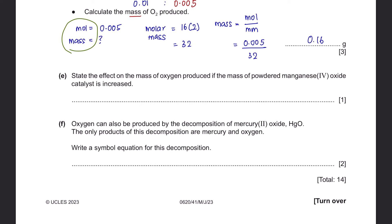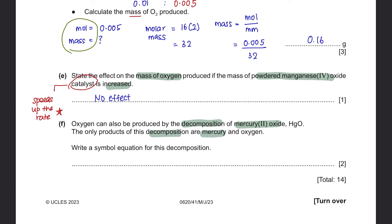Question 4E: if the mass of powdered manganese oxide catalyst is increased, a catalyst only speeds up the reaction — it does not change the amount of product produced. Therefore, there will be no effect on the mass of oxygen. Question 4F: write a simple equation for the decomposition of mercury oxide. Mercury oxide is HgO, and the only products are mercury and oxygen. Balance the equation: 2HgO → 2Hg + O₂. Check that the equation is balanced — two oxygens on each side and two mercury on each side.